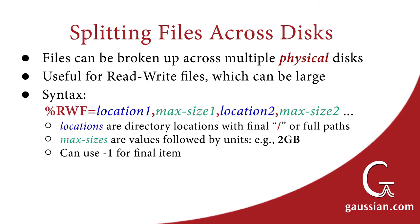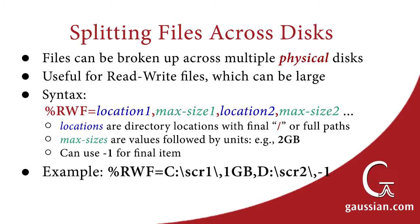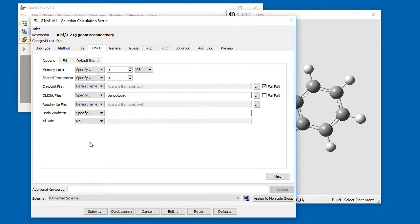This example shows that the read-write file should use two directory locations — the SCR1 folder on the C drive and the SCR2 folder on the D drive — using the auto-generated name in both cases. The first segment has a maximum size of 1 GB. We can also specify the %RWF directive using GaussView; here, we specify a single location for the read-write file.